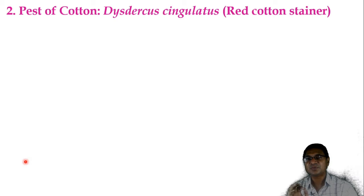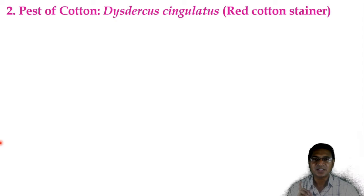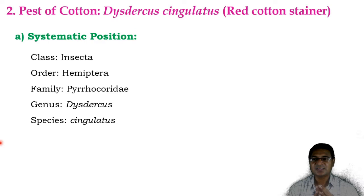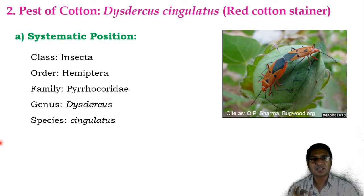After the major pest, we move toward the minor pest — the pest of cotton, which is Dysdercus singulitis, commonly known as the red cotton stainer or red cotton bug. Its systematic position: class Insecta, order Hemiptera (members commonly known as bugs), family Pyrochoridae, genus Dysdercus, and species singulitis.